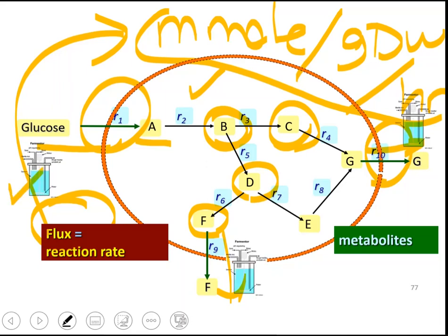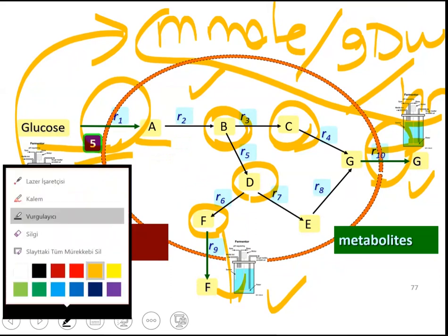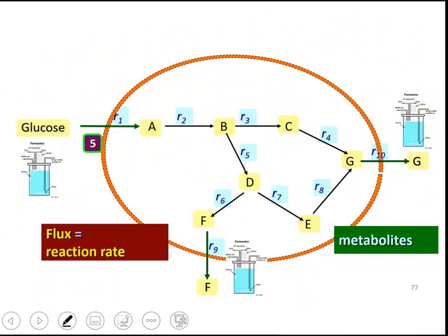You can use fermentation to quantify those external rates, the rates of consumption of metabolites, which means that if you measure the rate of glucose consumption as 5, this means that glucose is taken up by the cell at a rate of 5, let's say millimole per gram dry weight per hour.